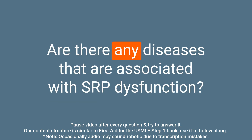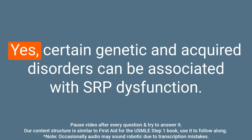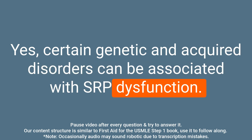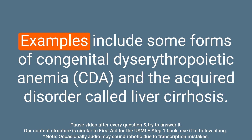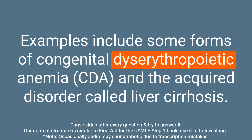Question: Are there any diseases associated with SRP dysfunction? Answer: Yes. Certain genetic and acquired disorders can be associated with SRP dysfunction. Examples include some forms of congenital dyserythropoietic anemia and the acquired disorder called liver cirrhosis.